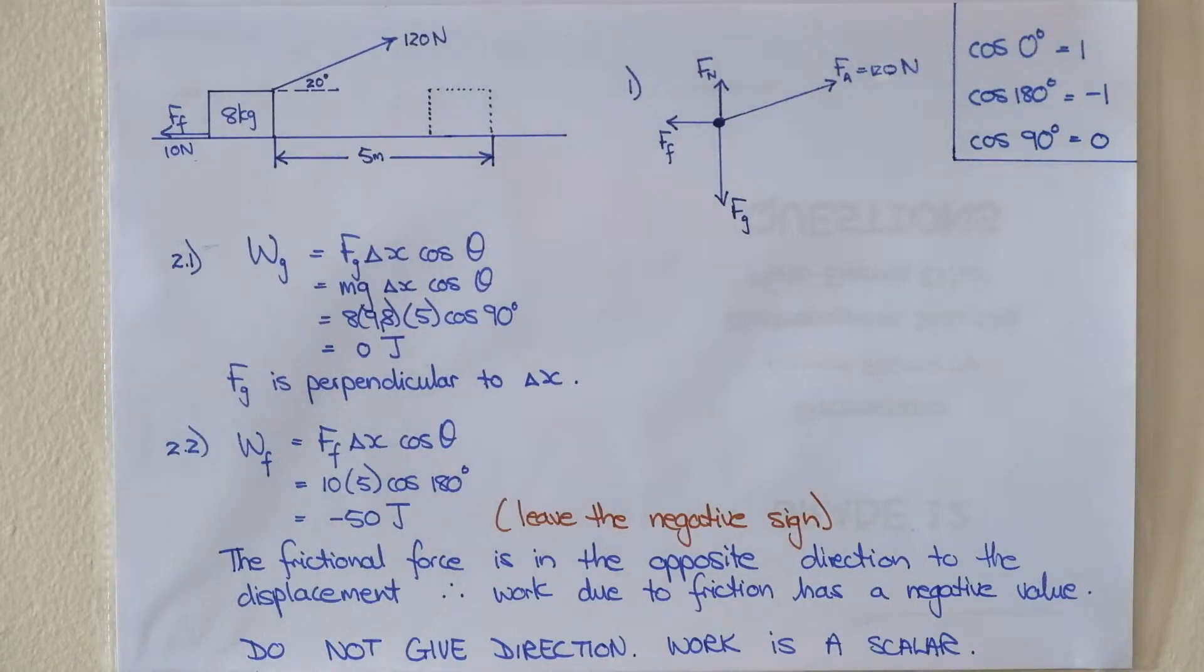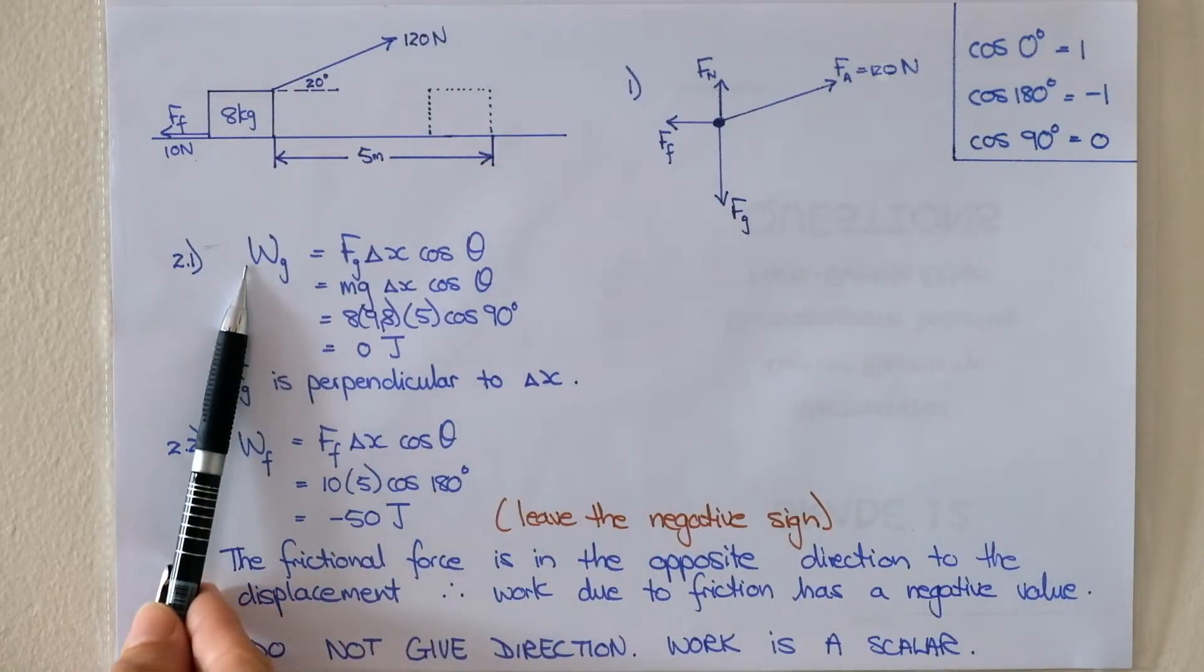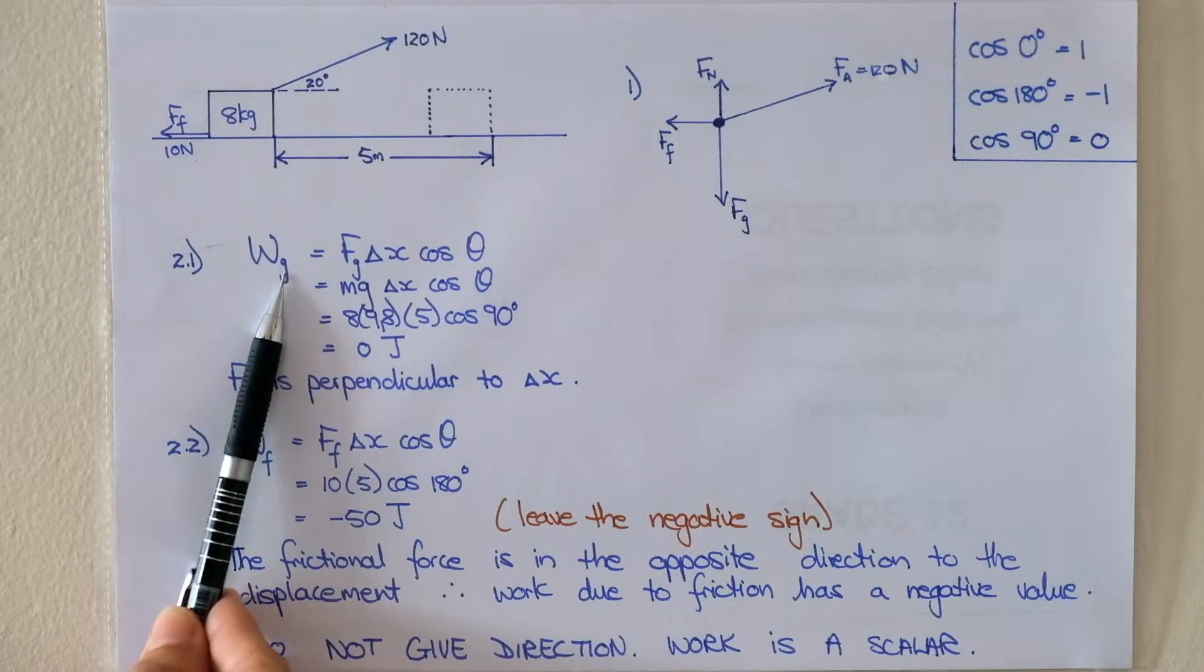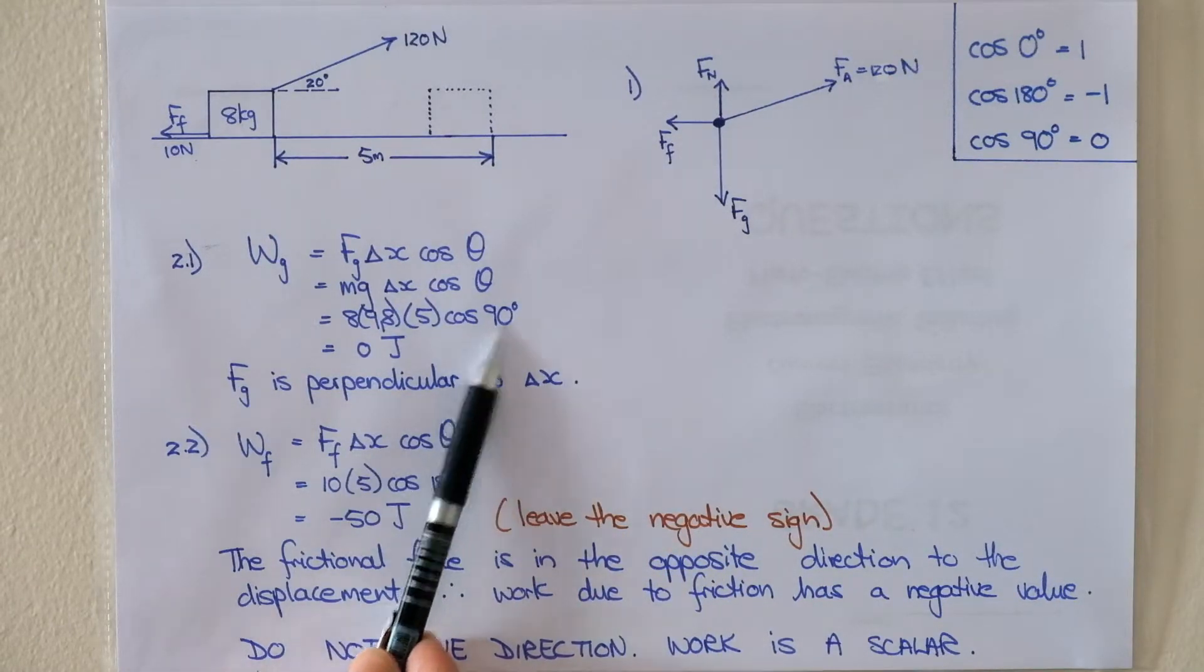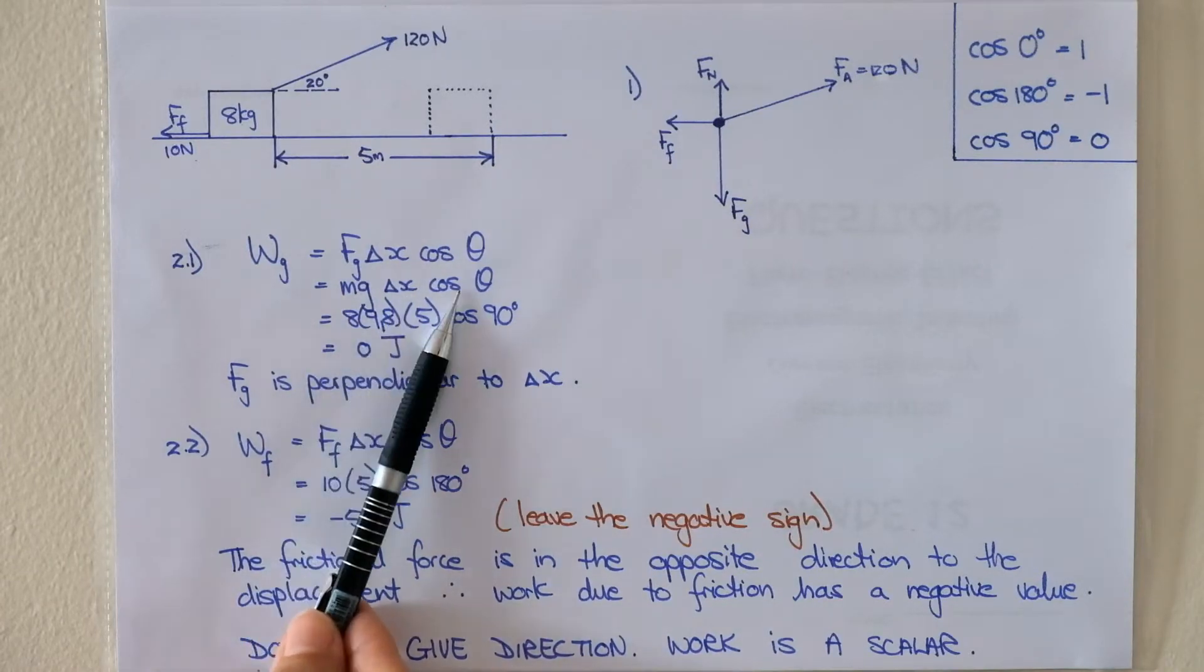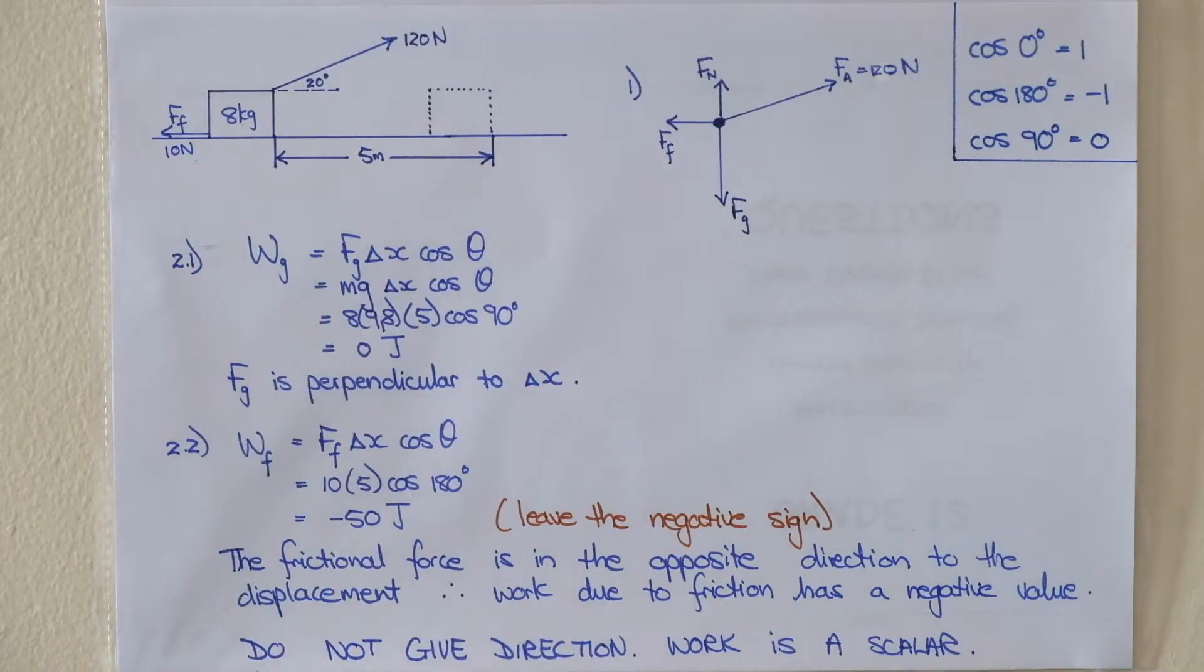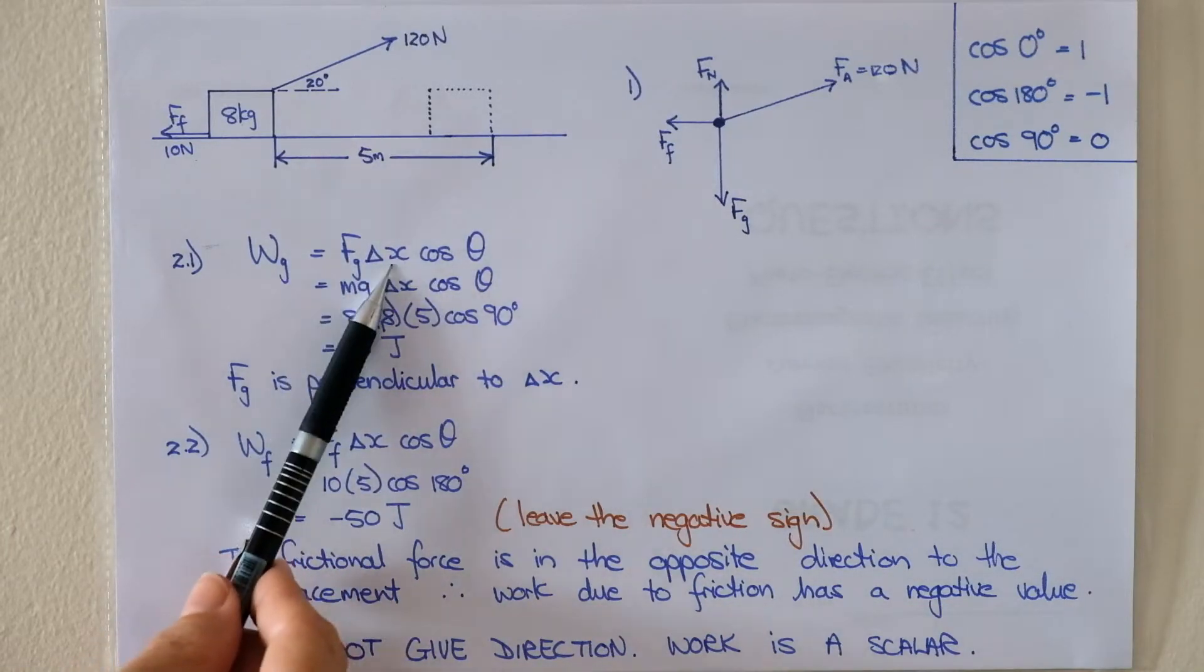So the first question was to calculate the work due to the gravitational force. So gravitational force we normally use the symbol Fg. So the work we're going to call Wg. Fg is vertically downwards so our angle is going to be cos of 90. Fg is equal to mg delta x cos theta.